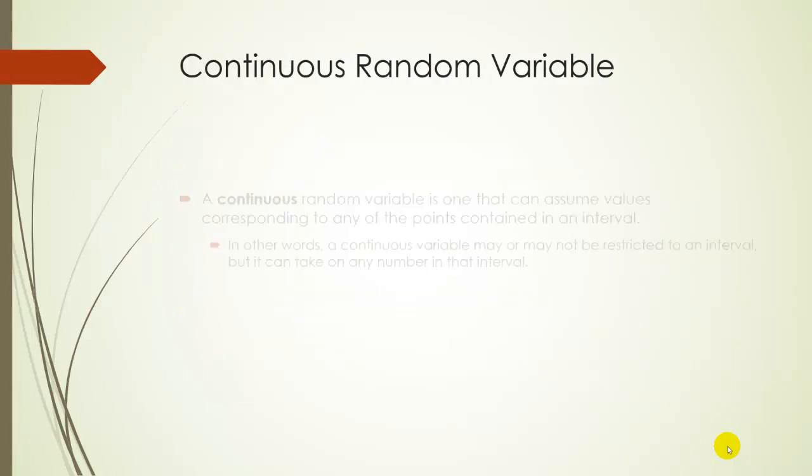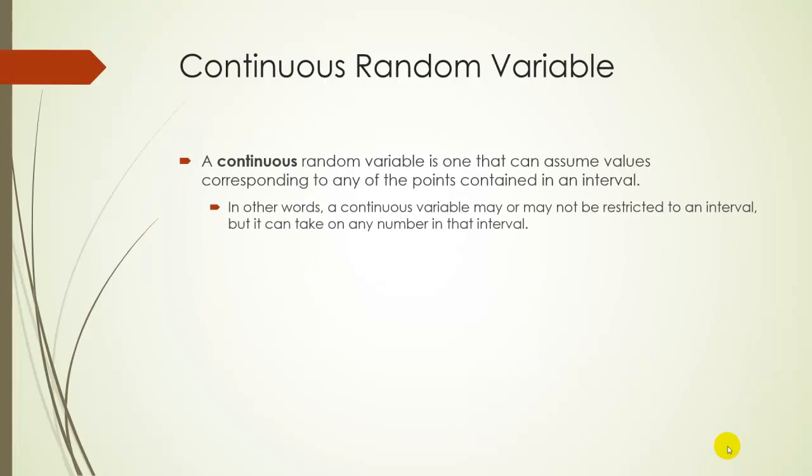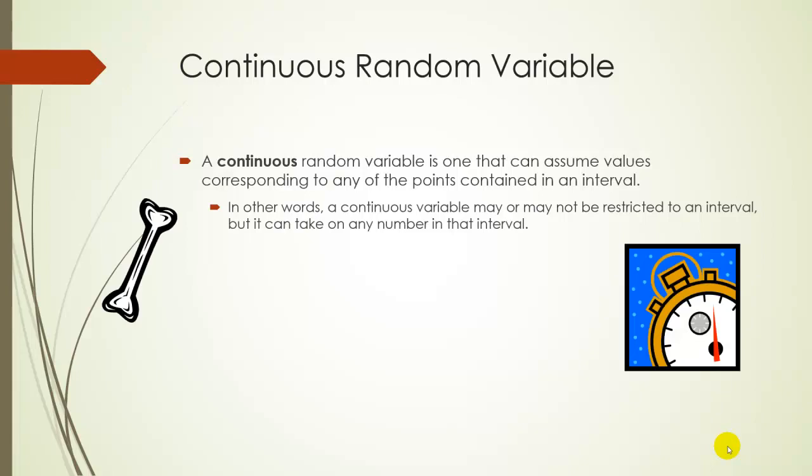So a continuous random variable is any variable where your outcomes are going to be over an interval. So, like for example, the length of a femur, just a bone, it has to be greater than zero. If it's zero, then it doesn't exist and technically I guess there's no limit. Time it takes to complete an exam that's 120 minutes. It could be any time between zero and 120 minutes. Not including zero because you can't complete an exam in zero minutes. Technically, I guess you could complete it in a second. And any number up to 120 minutes, including 120 minutes.